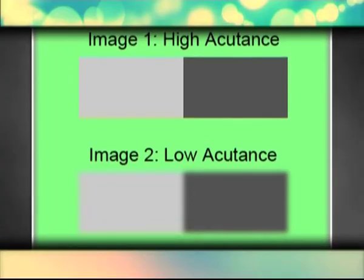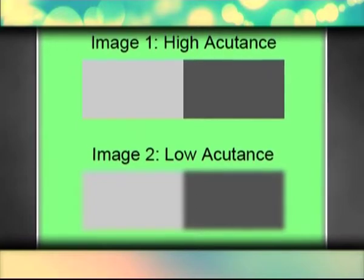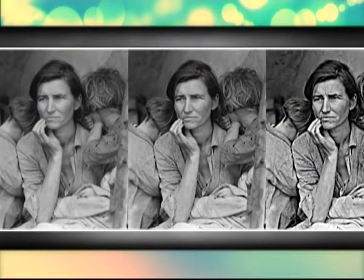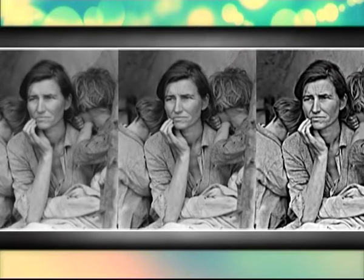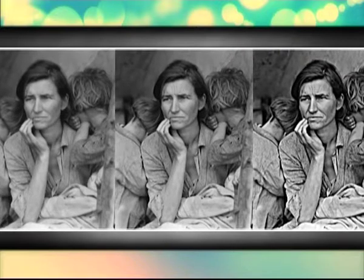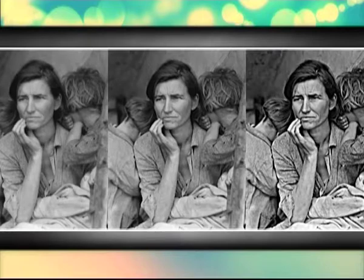Number 5: Accutance. Accutance is a measurement of a film's ability to record edge sharpness, particularly between differing tonal areas. Slow films do this better than fast films, producing more apparent sharpness in the image. Accutance is actually measured by photographing a knife edge.